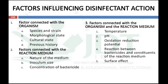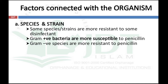We can discuss each factor in detail. The first factor connected with the organism is species and strain. Some species or strains are more resistant towards the disinfectant. For example, gram-positive bacteria are more susceptible to penicillin and can be killed easily by it. But gram-negative bacteria are more resistant towards penicillin, so we have to either add another disinfectant or surfactant, or increase the temperature of the disinfectant solution to increase the bactericidal effect.